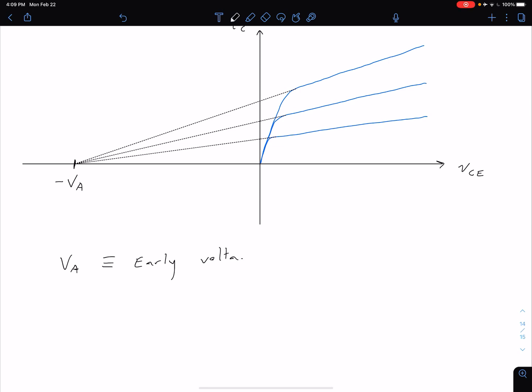And again that value of early voltage is positive, so for instance just to give you a rough idea, maybe our VA is 100 volts, so that means the intersection of the x-axis here would be occurring at negative 100.